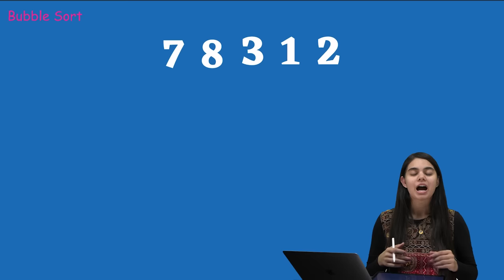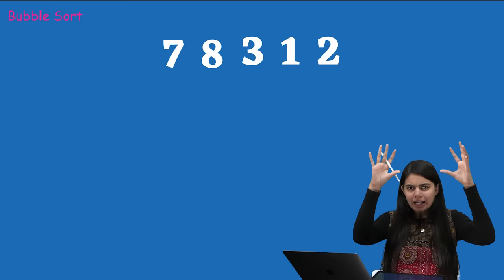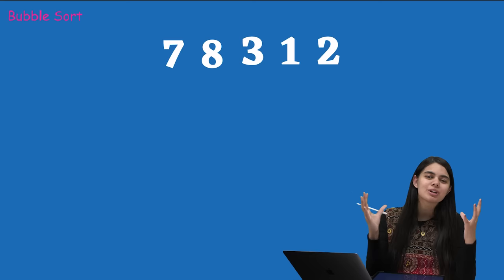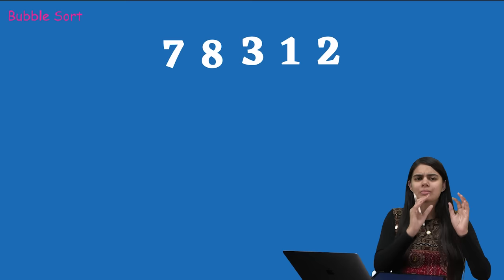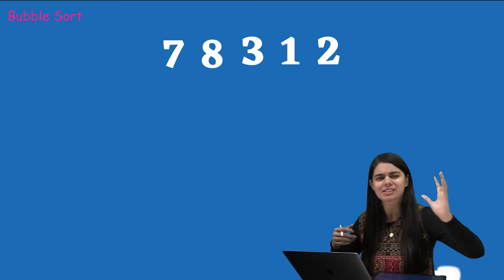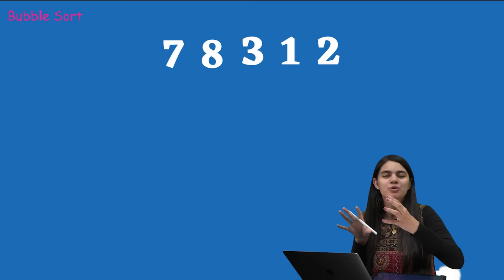Let's start with bubble sort — the first basic sorting technique. The name comes from bubbles in water, which rise up to the surface. Keeping this phenomenon in mind, in bubble sort we raise elements and push the largest element to the end. Then the next largest goes to the second last position, then the third last, and so on.